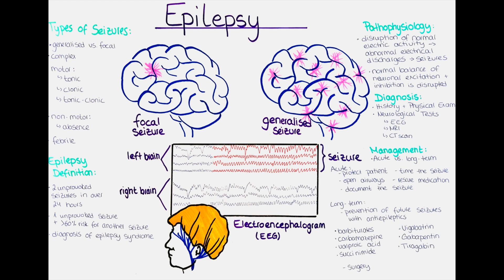The physical exam should include a detailed evaluation of the patient's mental status, cranial nerves, motor and sensory function, and reflexes. Neurological tests are used to confirm the presence of seizures and identify any underlying causes. These tests may include an electroencephalogram (EEG), which records the electrical activity of the brain and can help identify abnormal patterns characteristic of seizures. An MRI or CT scan may also be ordered to look for structural abnormalities or lesions in the brain.